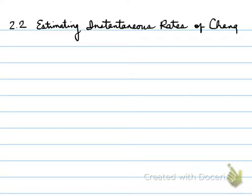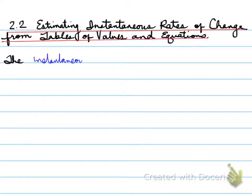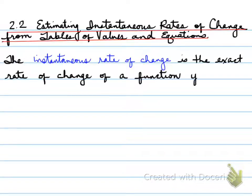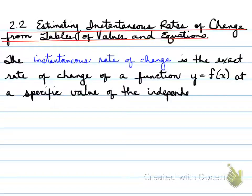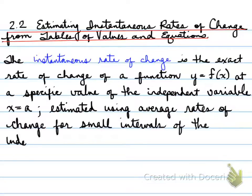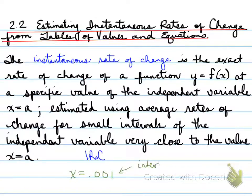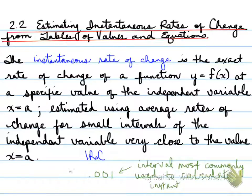2.2: estimating instantaneous rates of change from tables of values and equations. The instantaneous rate of change is the exact rate of change of a function y equals f at x, at a specific value of the independent variable, for example x equals a. It's estimated using average rates of change for small intervals of the independent variable, very close to the value of a — for example, we use 0.001 as our value.